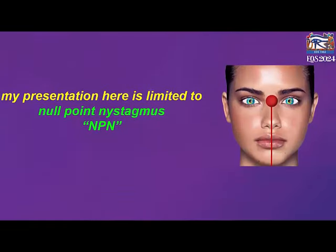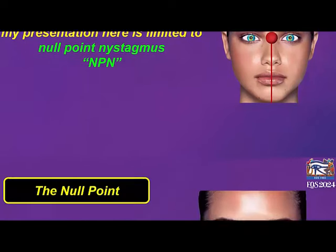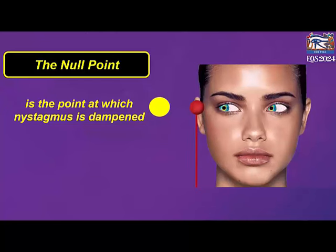My presentation here is limited to the clinical picture and management of null point nystagmus. What is the null point? The null point is the point at which nystagmus is damped. It is usually at the periphery of the field of vision.